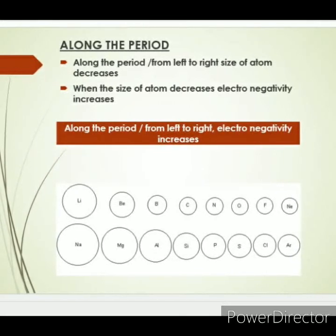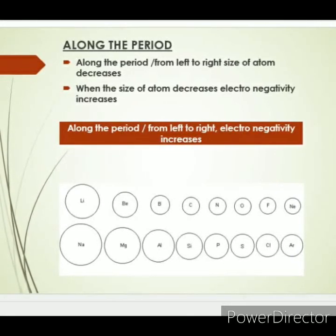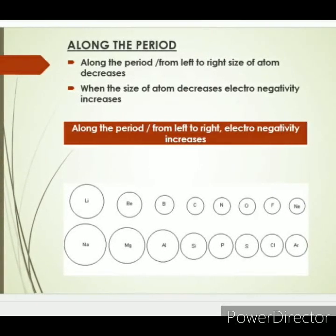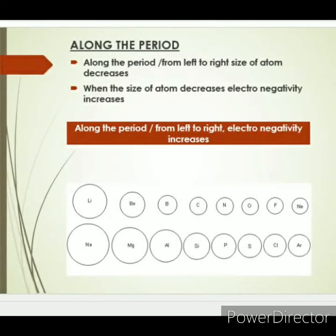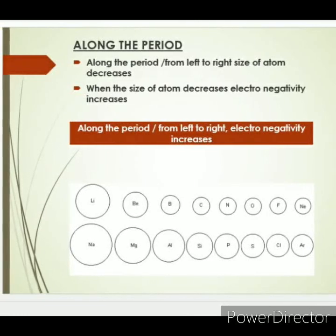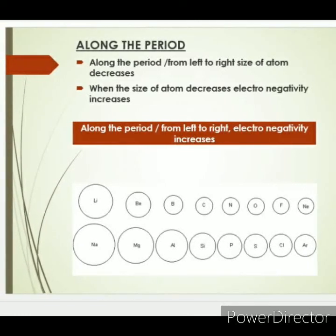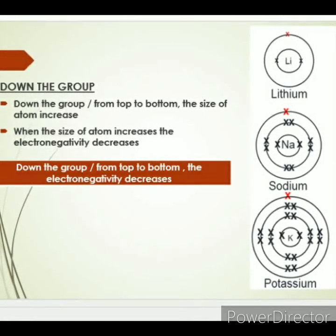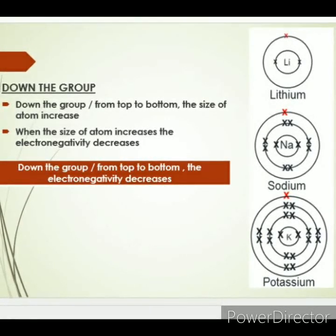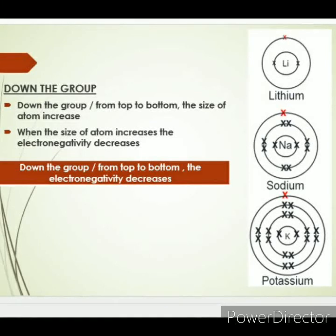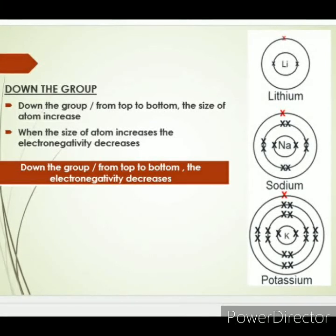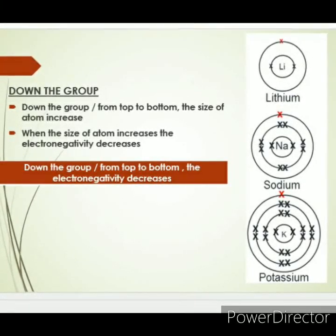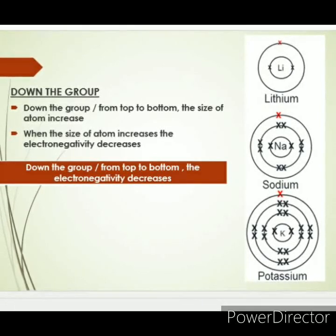Our concern is what happens to electronegativity if you move from left to right along the period. Along the period, the size of the atom decreases. When the size of the atom decreases, electronegativity increases. So we can conclude that along the period, from left to right, electronegativity increases.